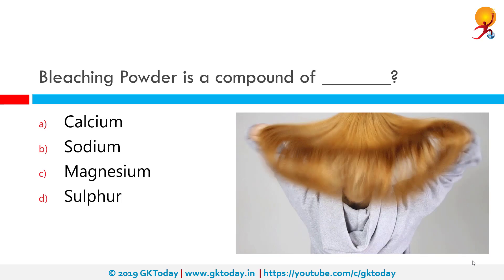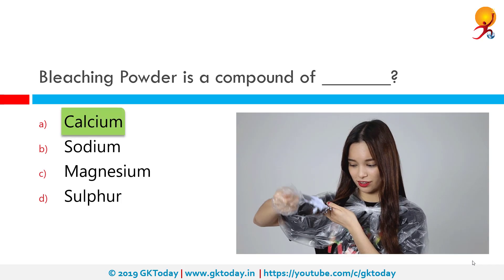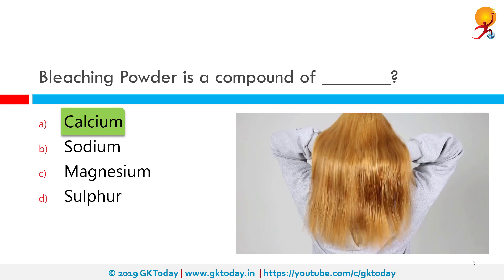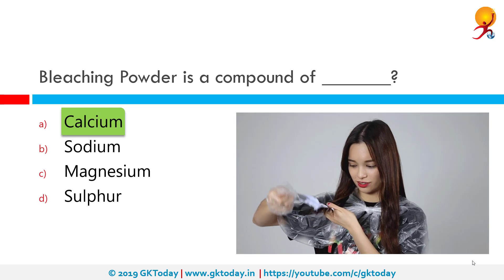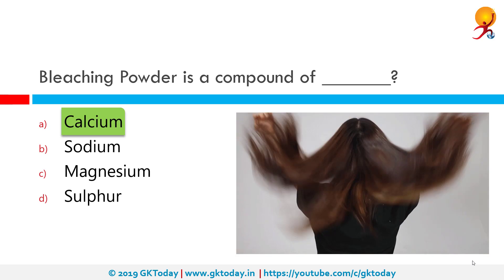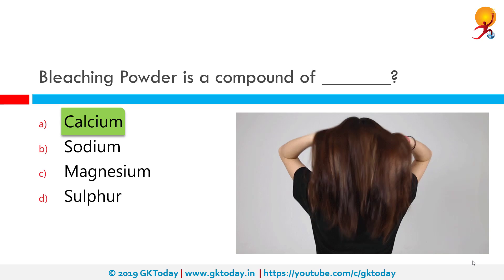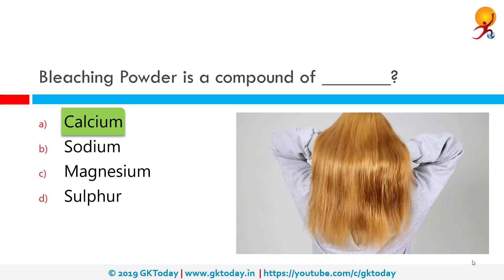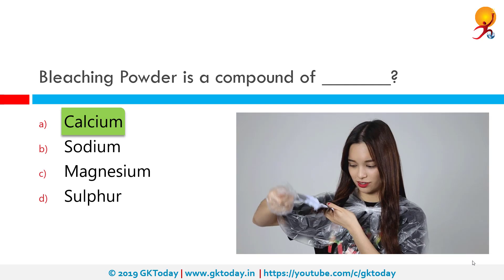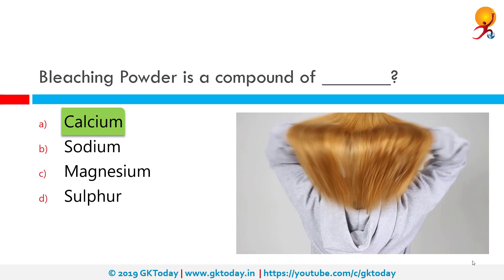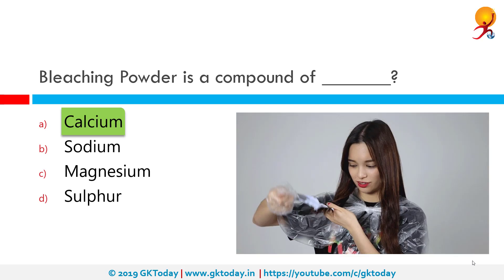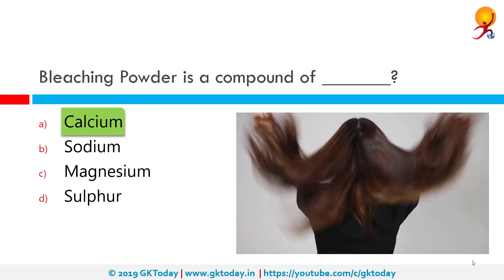Bleaching powder is a compound of calcium. Bleaching powder is chemically calcium oxychloride. It is manufactured using Blackman's plant, in which slack lime and chlorine are made to react, creating bleaching powder. When exposed to air, bleaching powder gives the smell of chlorine, because it reacts with carbon dioxide from the atmosphere to produce calcium carbonate and chlorine.